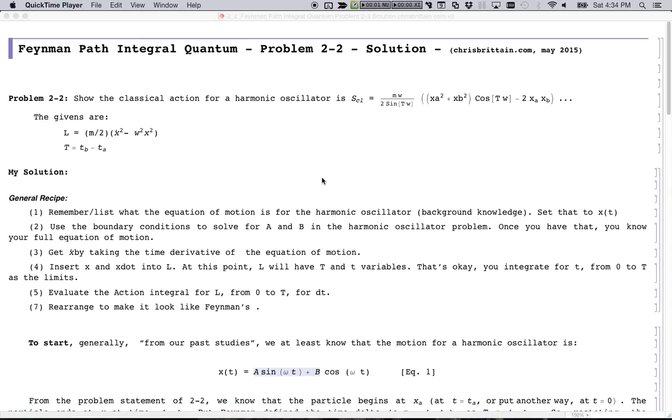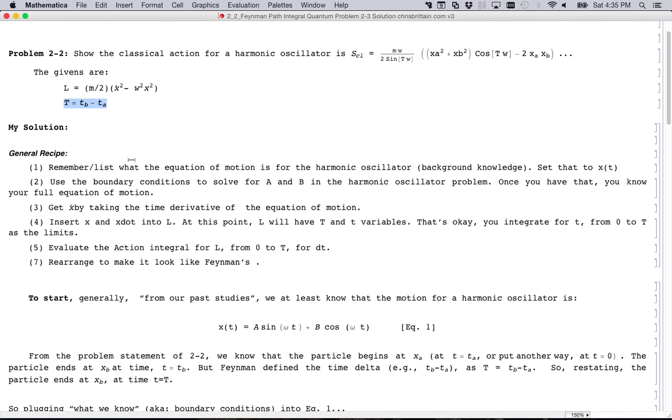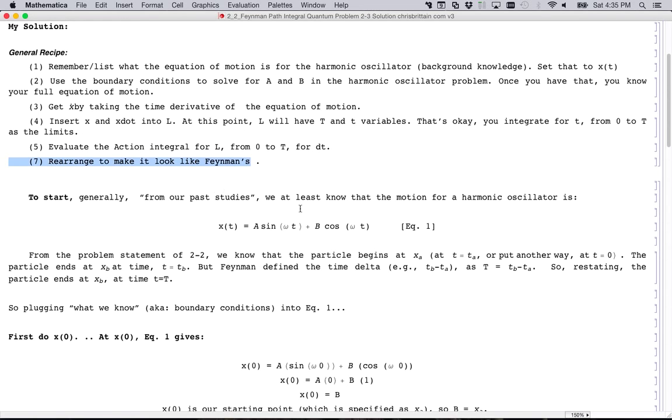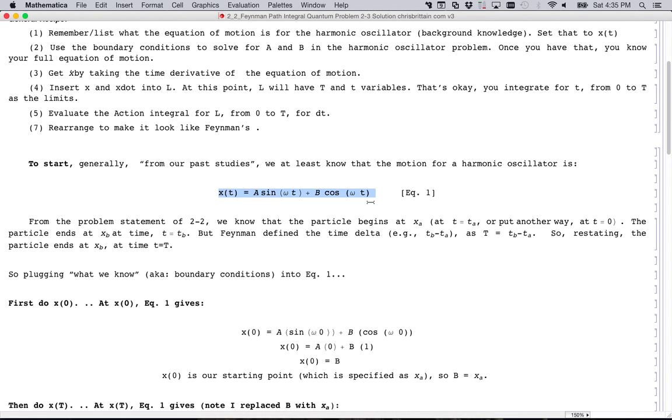Problem 2: Show that the classical action for a harmonic oscillator is this. This is stated, not really given. These are the givens. He gives a Lagrangian and he gives the time interval for all the little time integral increments that you're solving for. You can read this later, but basically what we do is anytime we're starting a classical action problem, you start with some equation of motion.